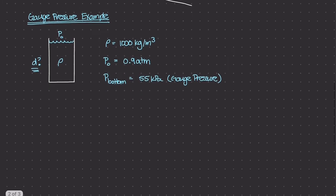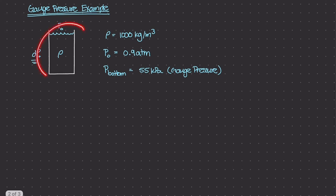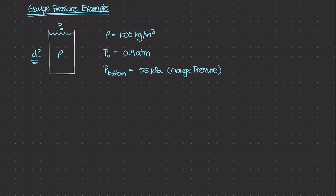In this example, we have a container filled with water. The mass density rho is 1,000 kilograms per meter cubed. The container is open at the top, so the P₀ value is 0.9 atm — not one full atmospheric pressure, not 101.3 kilopascals, but really 90% of 101.3 kilopascals.